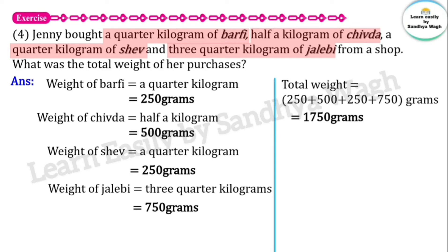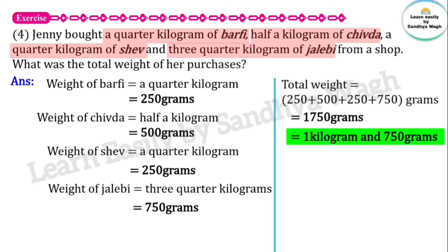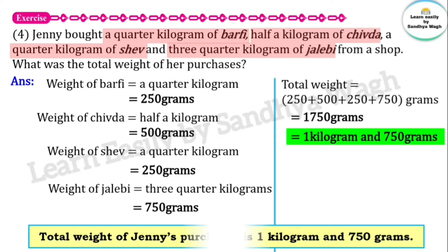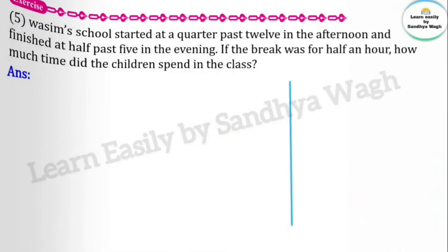The total comes to 1,750 grams. In 1,750 grams there is 1 kilogram and 750 grams. So the final answer is: the total weight of Jenny's purchases is 1 kilogram and 750 grams.